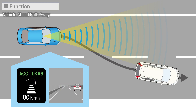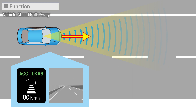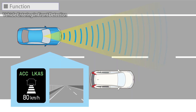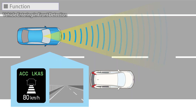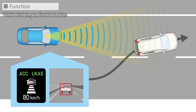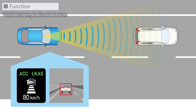When the camera and millimeter wave radar detect that there is no longer a vehicle in front of you while using ACC, the system automatically accelerates to a set speed and drives at a constant speed. If a vehicle pulls in front of you while using ACC, the camera and millimeter wave radar will measure the distance and speed difference from the new vehicle, and the ACC will follow the new vehicle maintaining a set distance while adjusting speed.